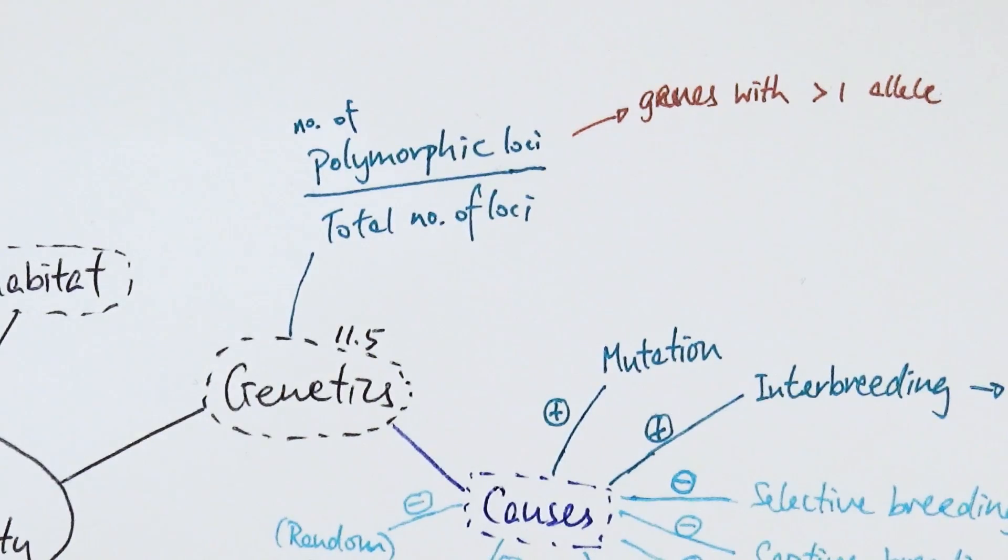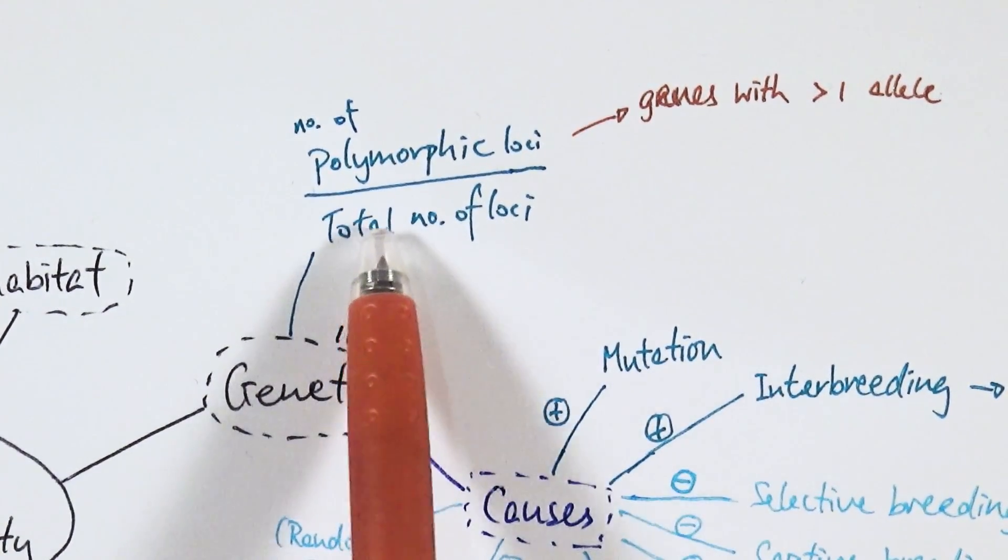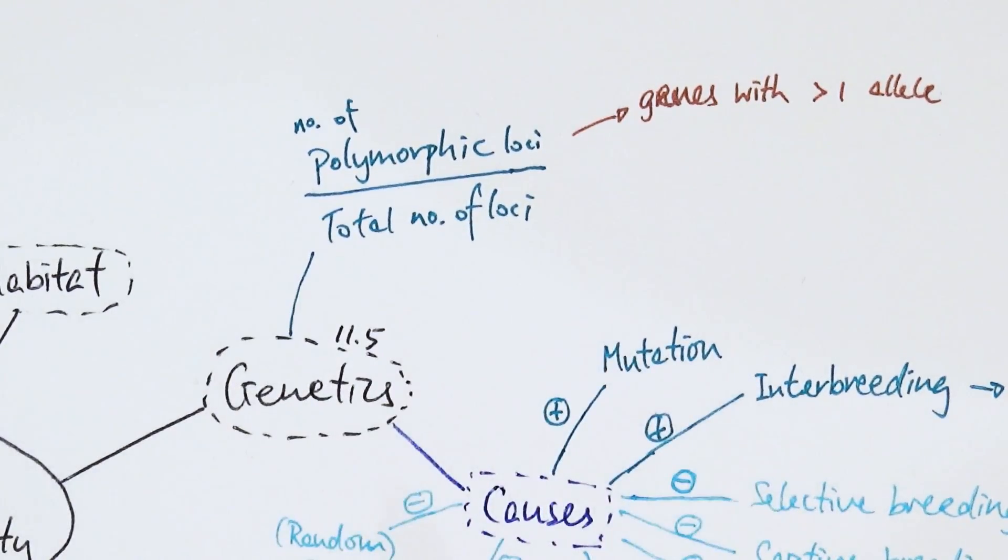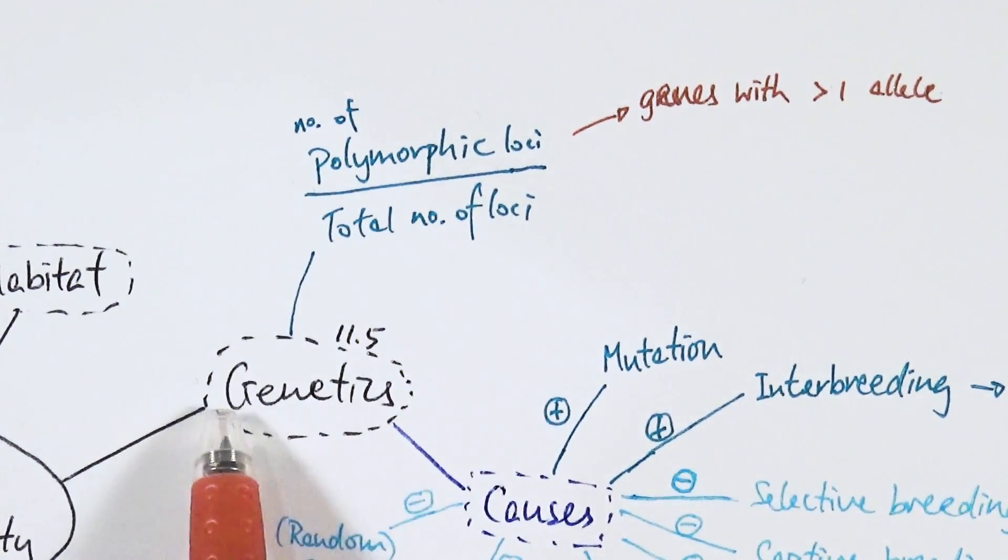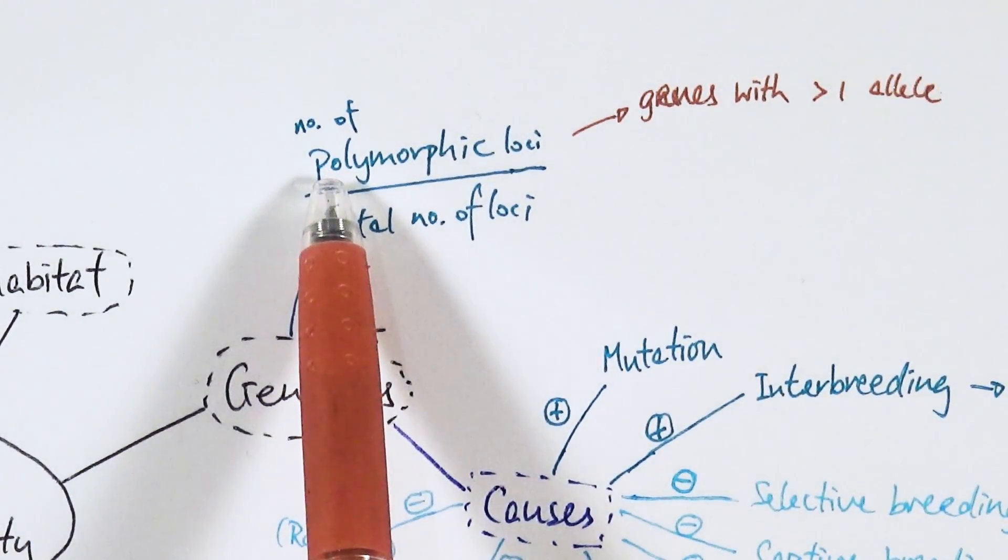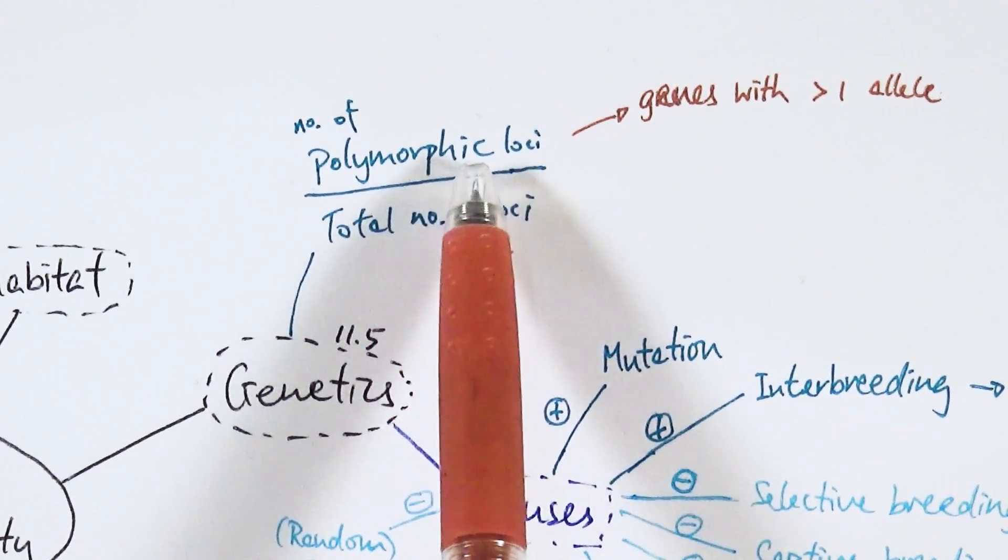The third type of biodiversity is genetic biodiversity. We can calculate it using this particular equation. It looks complicated but it's really just ratios or percentages. Genetic biodiversity refers to how many varieties of genes or alleles a particular organism may have.